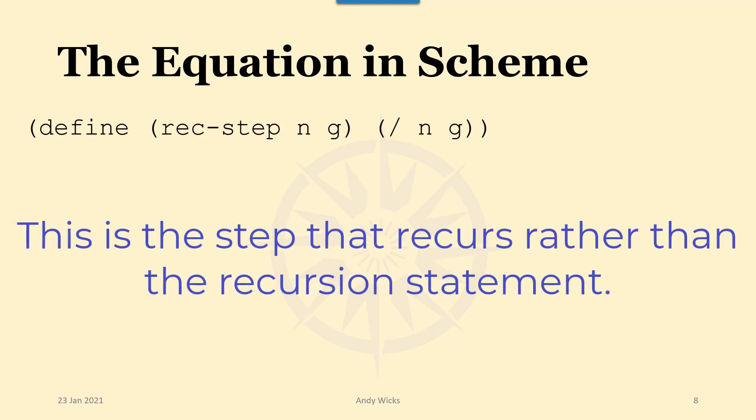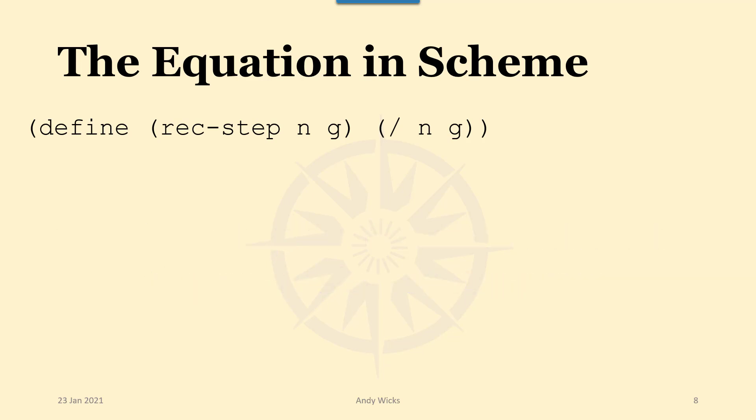As always we do it slowly. So first of all I'm going to define a function called rec-step, the recursion step, and that's going to take in two numbers. The number that we want to find the square root of and g is our guess. And the first thing I'm going to do is the first part of the equation I'm going to divide the number by the guess.